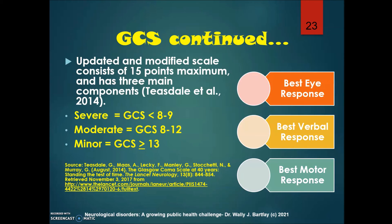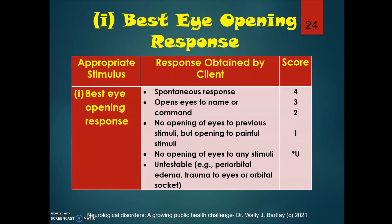Regarding severity: a score less than 8 or 9 is severe, 8 to 12 is moderate, and greater than 13 is minor. For best eye opening, the maximum score is 4, where the patient spontaneously opens their eyes. A score of 3 means opening eyes to name or command. Sometimes we cannot assess eye opening — for example in the emergency room — due to periorbital edema or trauma to the orbital socket, such as in a motor vehicle accident where a patient hit the steering wheel or went through the windshield.